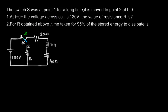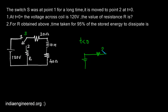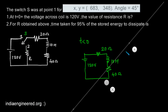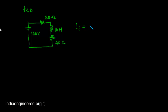Since switch S was at position 1 for a long time, for t less than zero we find the equivalent circuit: 120 volt source, switch closed, 20 ohm resistance, 10 henry inductor, and 40 ohm resistance. The initial current through the inductor is the voltage divided by total resistance — 120 divided by 60 — that is 2 amperes. So 2 amperes of current is flowing through the inductor initially.